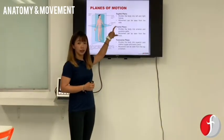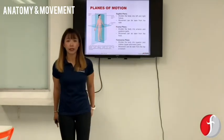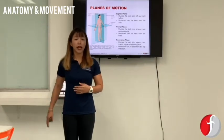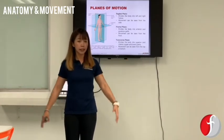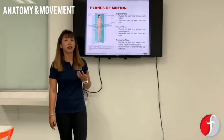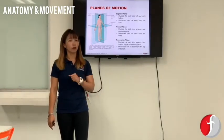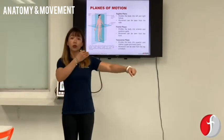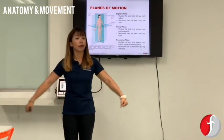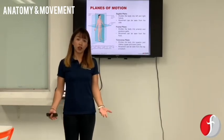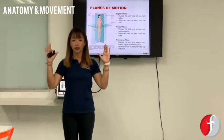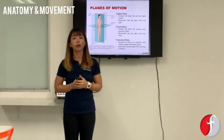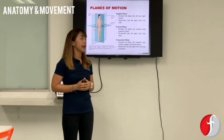Next, we've got the frontal plane. The wall that was beside you — now I'm going to move it to in front of you and behind you. Any movement you can perform in this situation we call a frontal plane movement. For example, a lateral raise — when you perform a lateral raise, your shoulder joint is performing a frontal plane movement. Similarly, if you perform a lat pulldown, your shoulder joint will also perform a frontal plane movement.